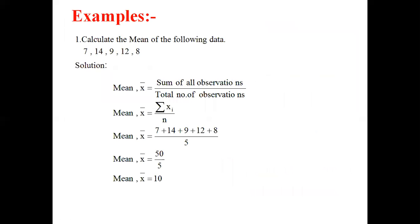Example 1: Calculate the mean of the following data: 7, 40, 9, 12, and 8. Here we have given only numerical values, so it is raw data. The formula for raw data is x̄ = Σxᵢ / n. The sum of all observations is 7 + 14 + 9 + 12 + 8, divided by 5, since there are 5 observations, which equals 50 / 5 = 10. So the mean of the given raw data is 10.